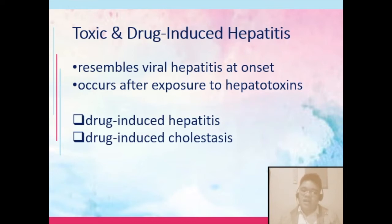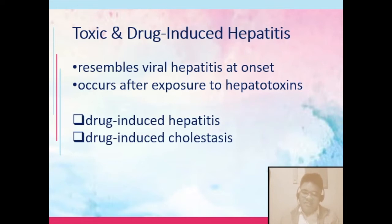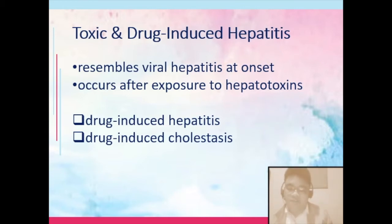Drug-induced hepatitis or drug-induced cholestasis would lead to hepatitis. Drug-induced cholestasis is the stasis of bile inside the gallbladder because of drugs. Bile staying in the gallbladder means increased risk for the formation of cholelithiasis — the development of stones. Once there are stones, there is a possible risk for obstruction. Once there is obstruction, there will be an increase of bile going towards the liver, and autolysis may occur, causing damage to the liver. This causes liver alteration by initiating either drug-induced hepatitis or drug-induced cholestasis.